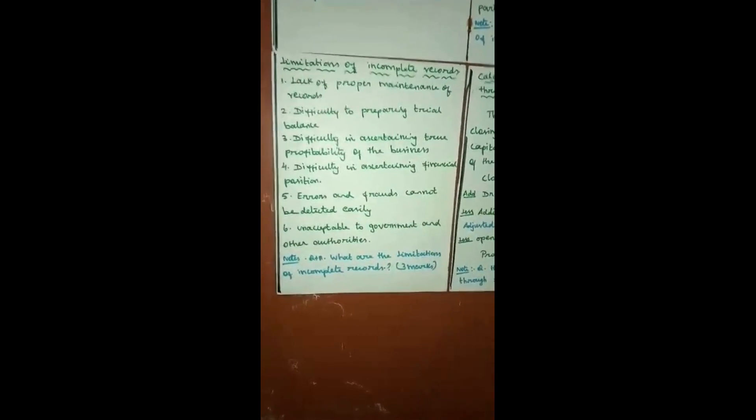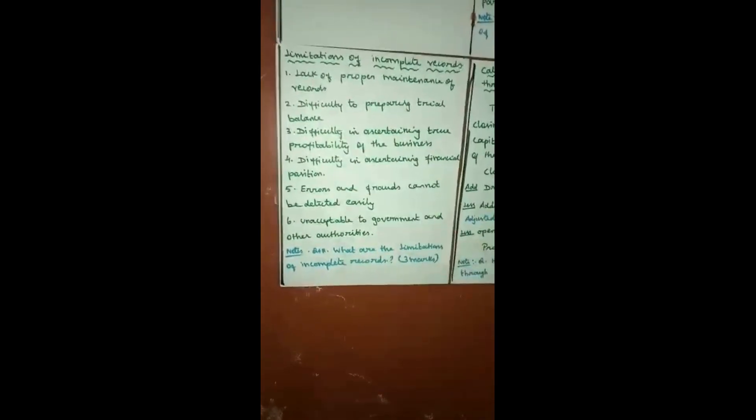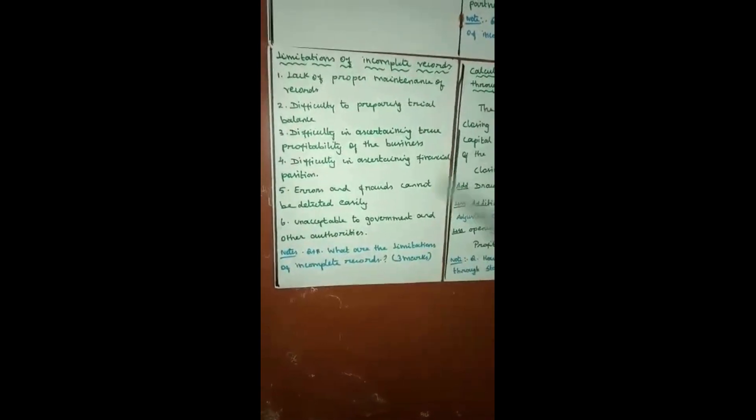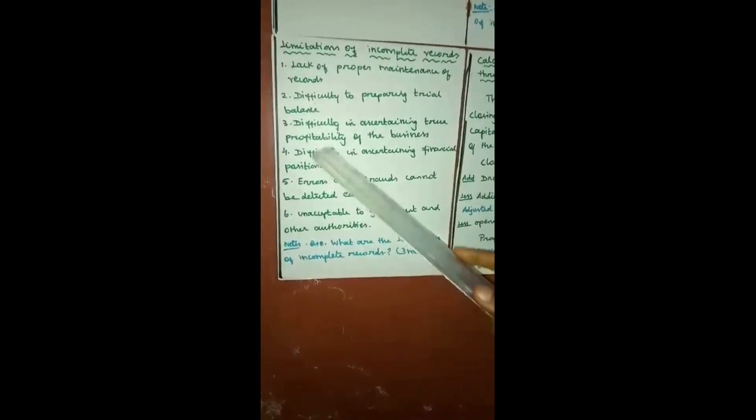What are the limitations of incomplete records? Limitation means disadvantage. First: lack of proper maintenance of records, because they do not record all the transactions. Second: it is difficult to prepare a trial balance. If you want to prepare a trial balance you need both debit and credit balances, but here only one type of account is maintained.